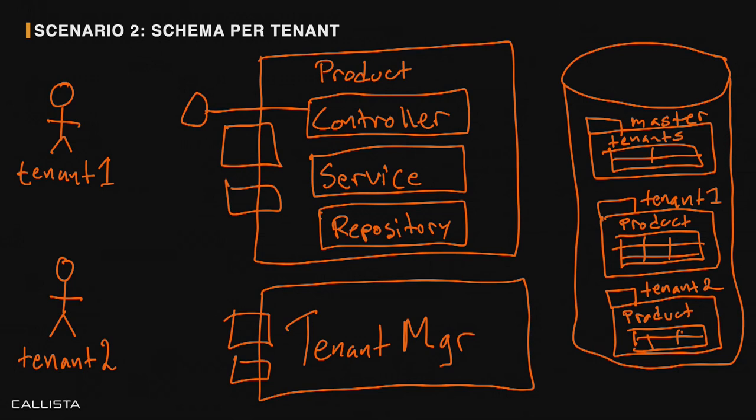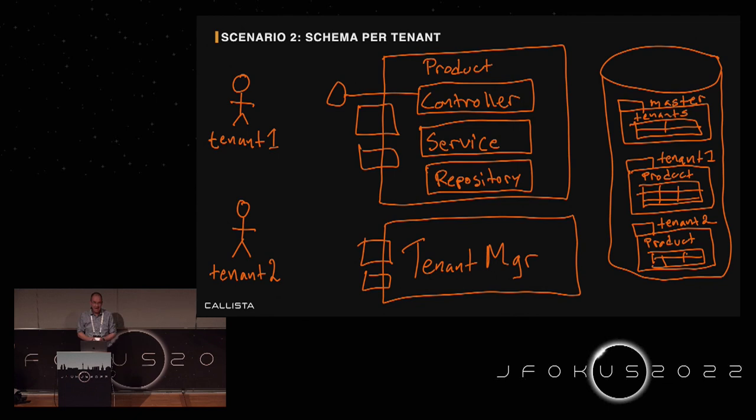That was a simpler implementation, but the major obstacle is maintaining those migrations. In this simple implementation they run sequentially. If you have thousands of tenants, you cannot do that in sequence — you have to parallelize the work. It will probably also take too long to do it on application startup, so you would need to break that out of your application and run the migrations separately.